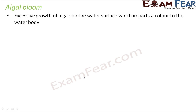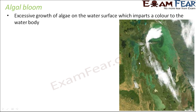Algal bloom is the excessive growth of algae on the water surface which imparts a color to the water body. Sometimes, if the growth is so intense, you do not get to see water anywhere — the entire surface is covered by a green carpet. This can happen not only in freshwater bodies but also in marine water bodies like seas and oceans.